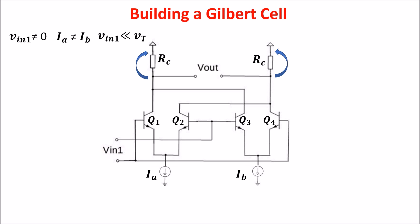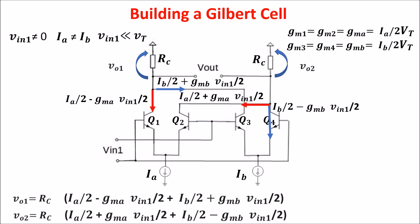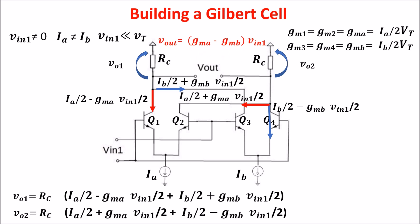Now let's see the small signal case in which we assume Vin1 less than the thermal voltage and Ib different from Ia. Let's assume that Q1 is matched with Q2, so Gm1 equals Gm2 equals Gma equals Ia/2 divided by the thermal voltage. The same for Q3 and Q4, so Gm3 equals Gm4 equals Gmb. You see that Vin1 different from zero produces an imbalance in the currents related to Gma and Gmb. The voltage drops on the RC resistors are these, and the Vout voltage is related to Vin1 and to the difference between Gma and Gmb.